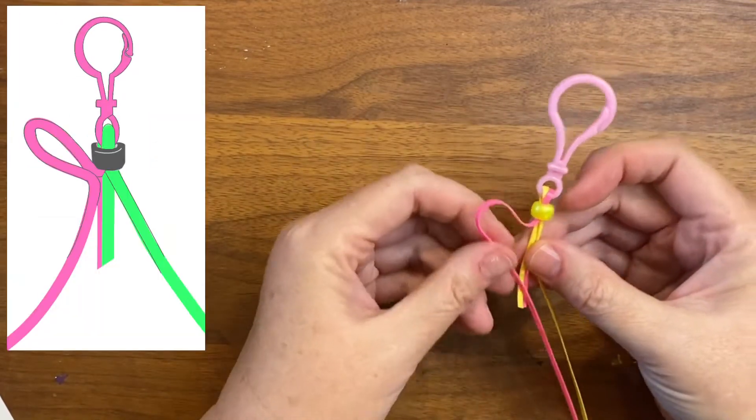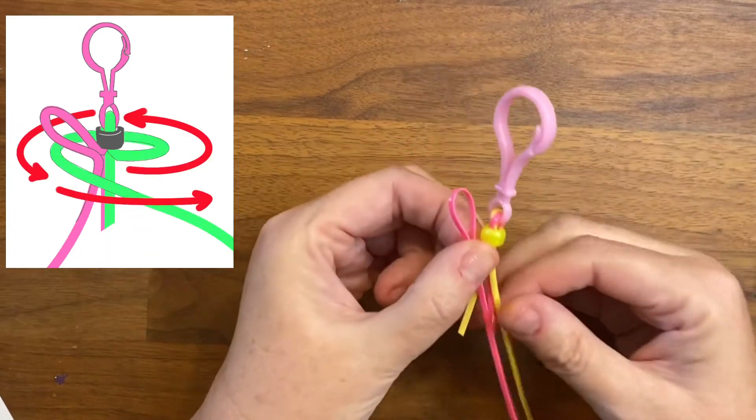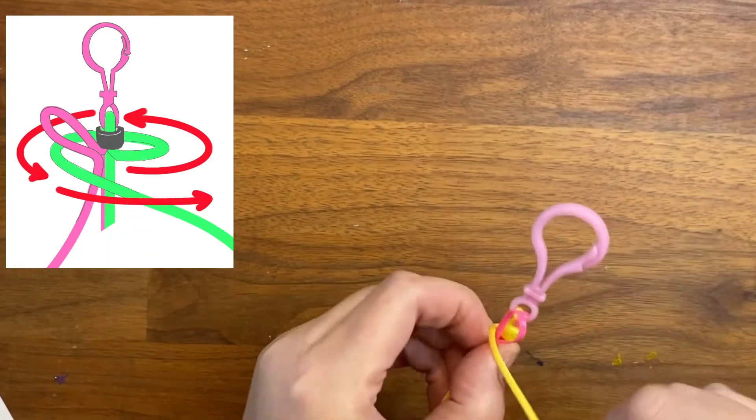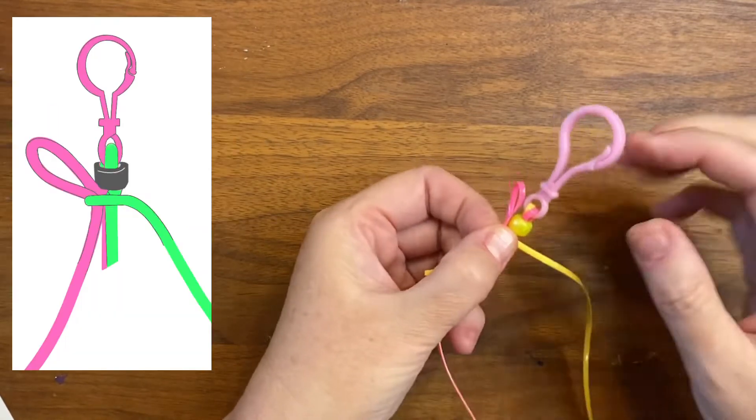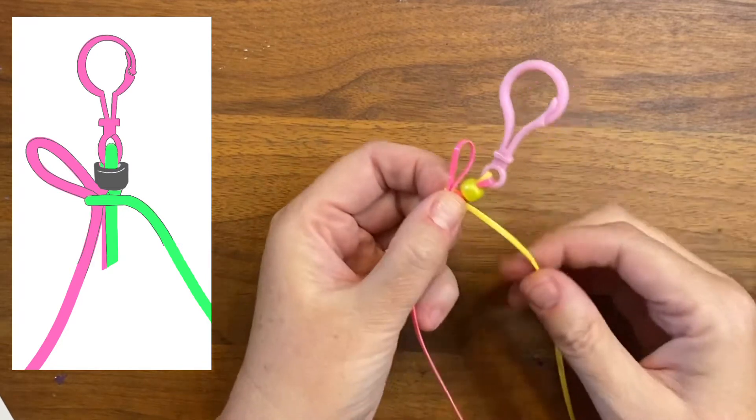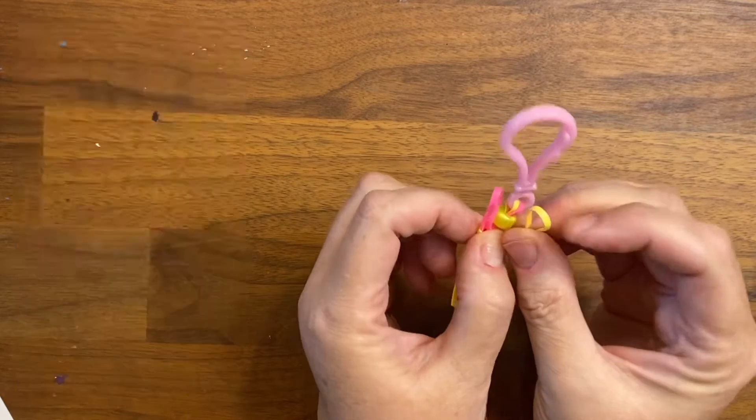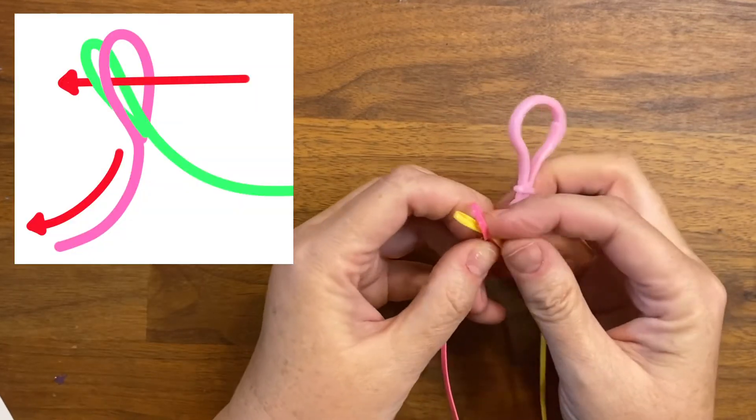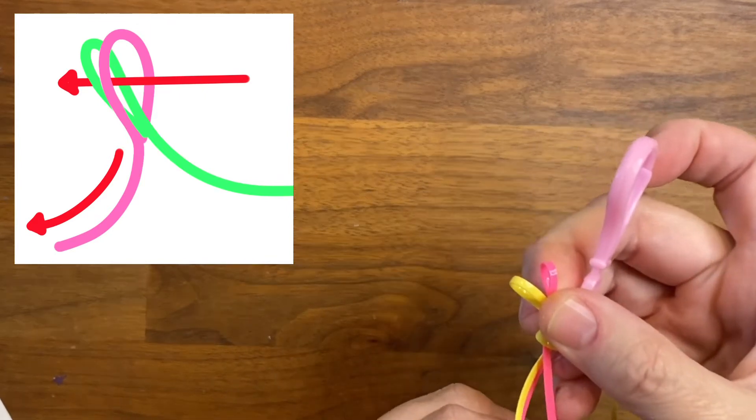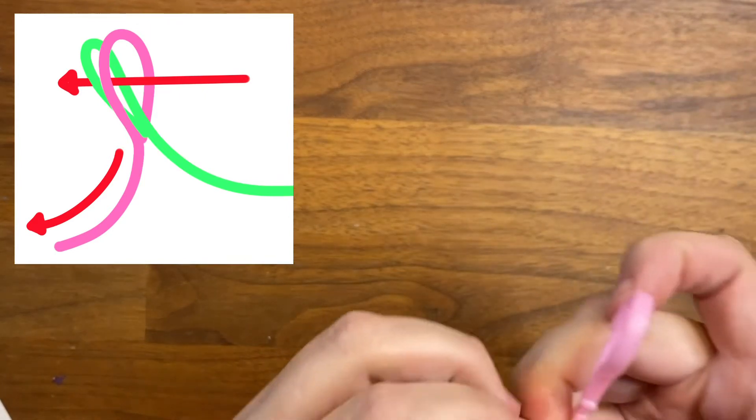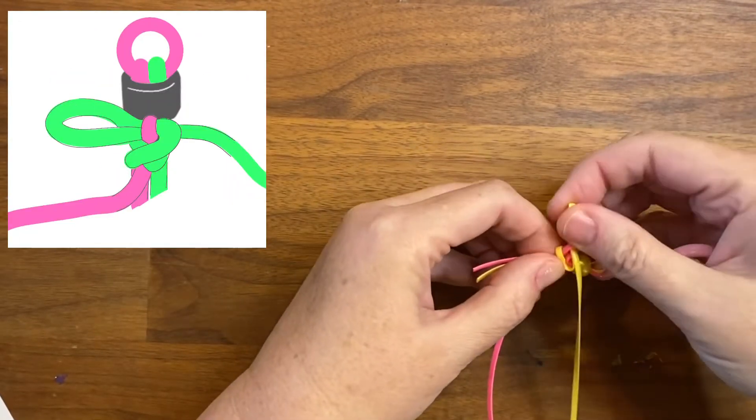From here, you'll take your left strand and make a loop. Then take your right strand, go behind the project, and over the top. Take a look at how that should look. Now make a loop with the right strand and just slide it into the first loop you made. And then in our case, we're going to pull down on the pink strand to secure the yellow loop.